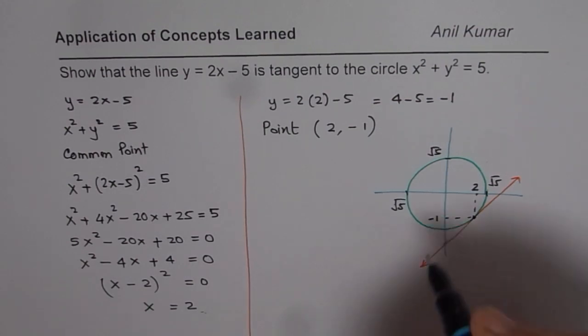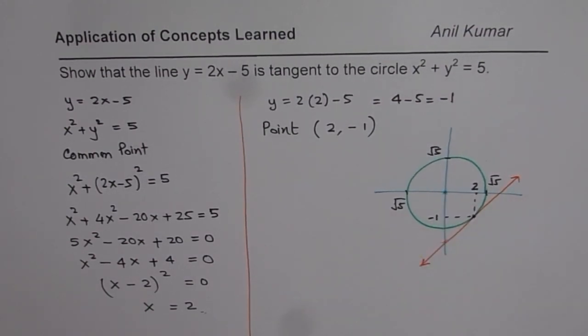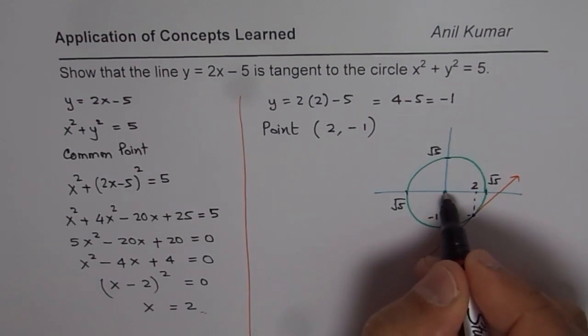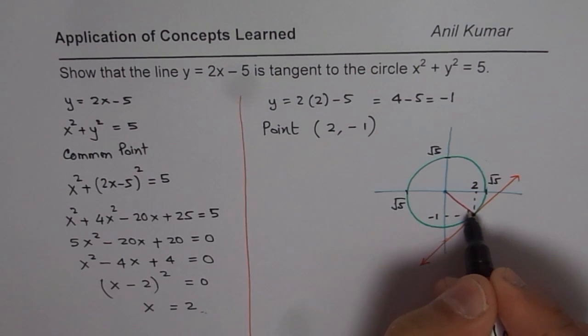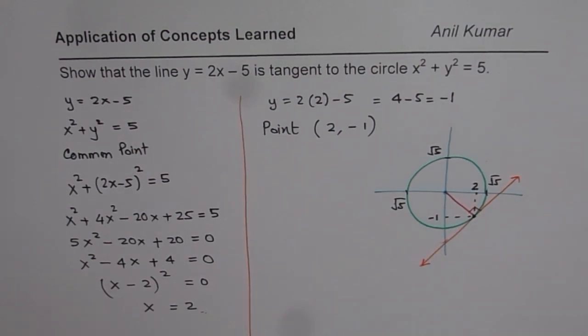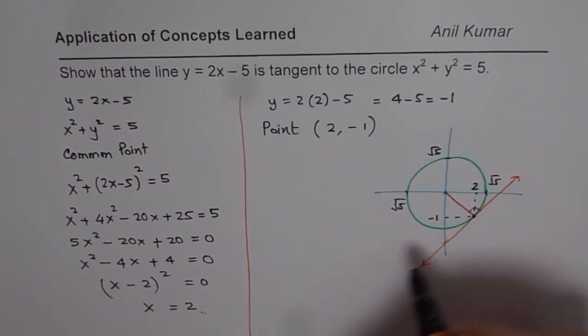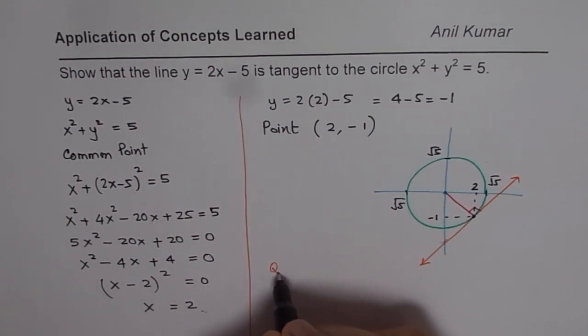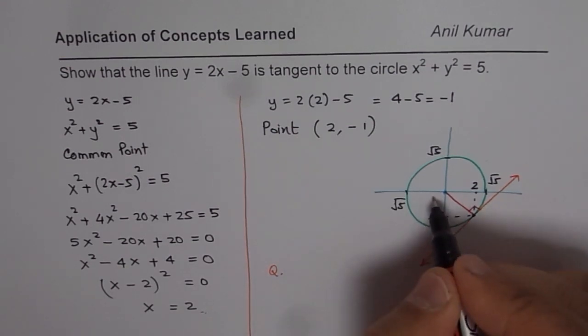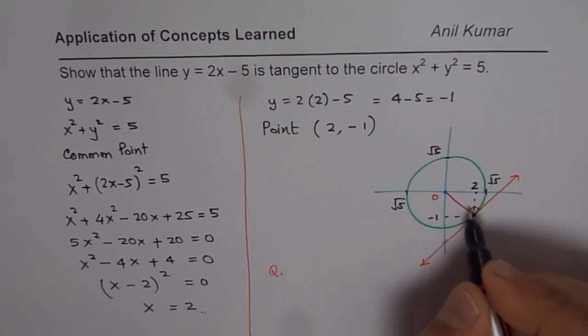Now the question before you is this. We have this diagram now right there. What you need to do is show that the slope is right angle. We already know the point, we know this line. Now for you the question is, let's say this point is O, and it touches at point P.